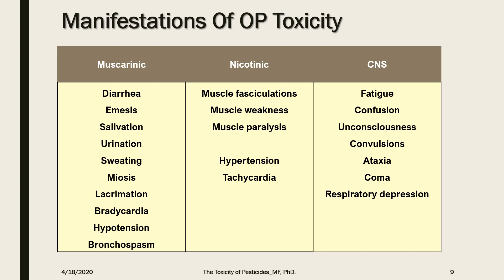Accumulation of acetylcholine at nicotinic receptors leads to musculoskeletal manifestations including muscle fasciculations and convulsions, followed by weakness and paralysis. If the patient has nicotinic receptor oversensitivity, they may develop tachycardia and hypertension. Centrally, accumulation starts with stimulation — anxiety, irritability, and convulsions — followed by a stage of depression where the patient develops coma with depression of the cardiovascular and respiratory centers, leading to death.